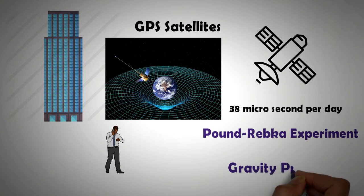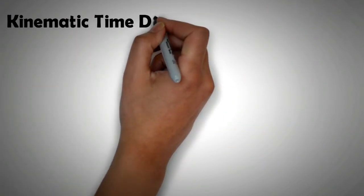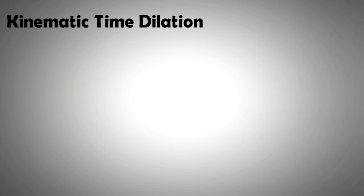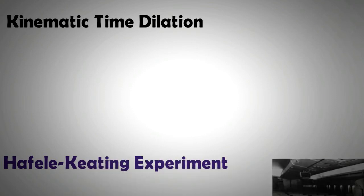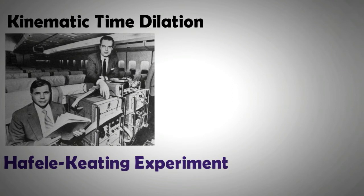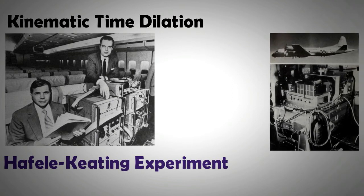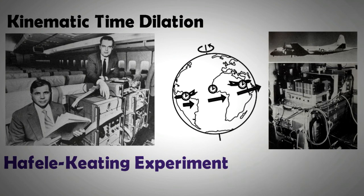Two of the more renowned experiments confirming gravitational time dilation are the Pound-Repka experiment and Gravity Probe A. Likewise, kinematic time dilation has also been confirmed through a very famous experiment. In a test conducted in 1971 dubbed the Hafele-Keating experiment, it was confirmed that a gain in time was observed by clocks that moved fast towards the east, with the reference frame assumed at a stationary center of the Earth. Slightly lesser gains were observed for objects moving at high speeds towards the west, due to the eastward rotation of the Earth. These experiments were carried out using commercial airliners with extremely precise atomic clocks on board.